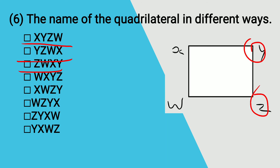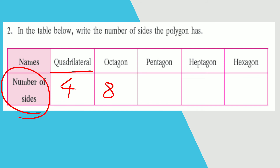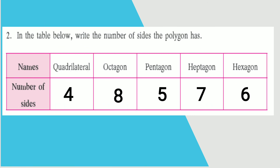The second question is: in the table below, write the number of sides each polygon has. A quadrilateral has 4 sides, an octagon has 8 sides, a pentagon has 5 sides, a heptagon has 7 sides, and a hexagon has 6 sides.